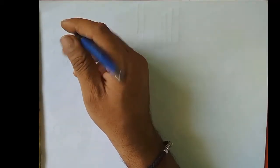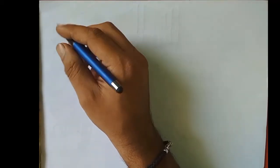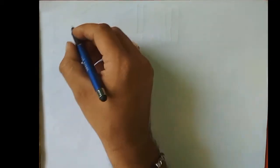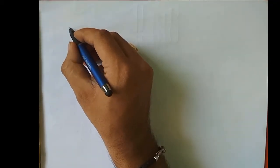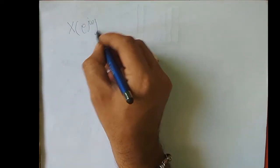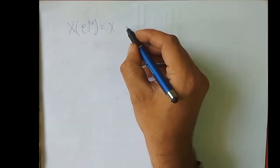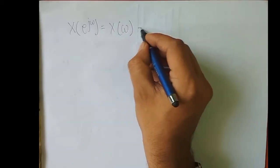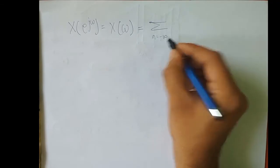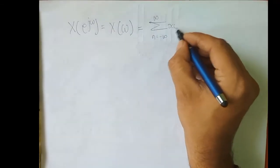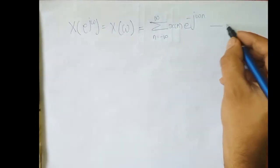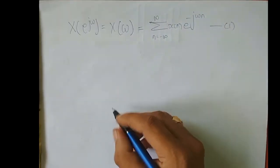Hi guys. Welcome to the second lecture of module 1. In lecture 1, we discussed about two equations. The first equation was the DTFT equation, which was x of e power j omega — in short, we call it x of omega — which is equal to summation n varying from minus infinity to infinity of x of n e power minus j omega n. We called it equation 1.